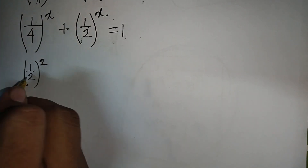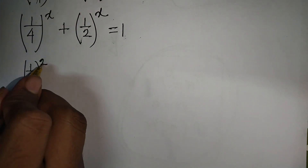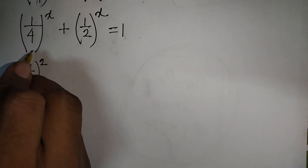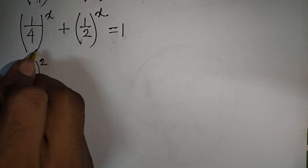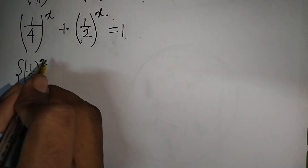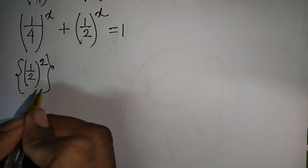Now, 1/4 can be written as (1/2) squared, since 1 over 2 squared equals 4. So the first bracket can be rewritten as (1/2) to the power 2.